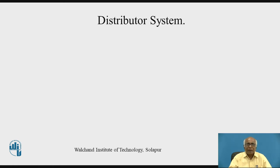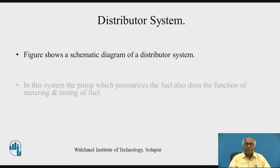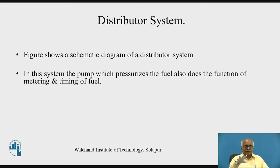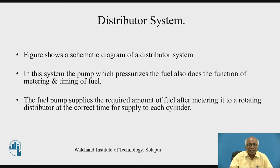There is one more system, known as the Distributor System, which is a further modification of the common rail. The figure shows a schematic diagram of the distributor system. In this system, the pump which pressurizes the fuel also does the function of metering and timing — this is the point where it differs from the common rail. In common rail, for each cylinder there is a separate metering and injector system; here, metering and timing are controlled centrally. The fuel pump supplies the required amount of fuel after metering it to a rotating distributor at the correct time for supply to each cylinder.